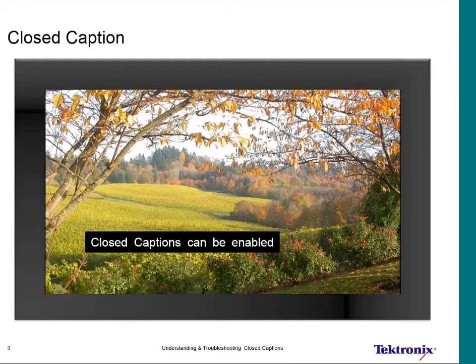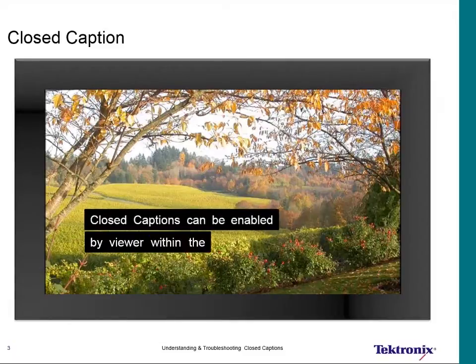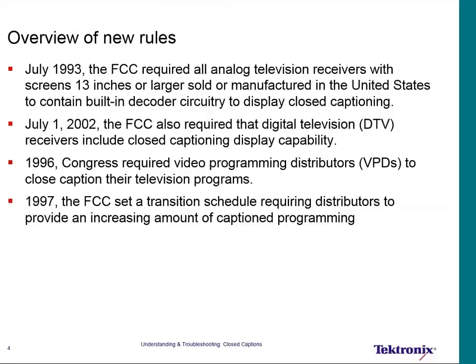The government has mandated that we be able to show captions on screen for hearing-impaired folks within our audience. Through the years there have been a number of changes to the rules and regulations. In 1993 it first started, requiring all analog television to have the ability to show captions if they were 13 inches or larger.